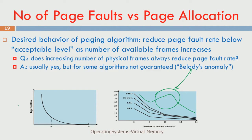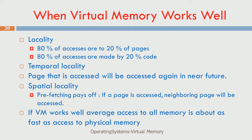Why does paging actually work? If I have a program that spans across 100 pages and I give it only 20 pages, it will still work fine and not create many page faults. The reason is the 80/20 rule: 80 percent of accesses are only to 20 percent of pages. Similarly, 90 percent of the program executes for 10 percent of the time and 10 percent of the program executes for 90 percent of the time — the 90/10 rule in software engineering. So if those 20 percent of pages are inside your memory, your program will work fast.